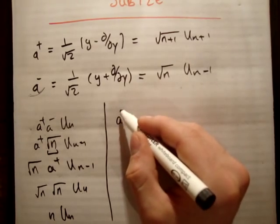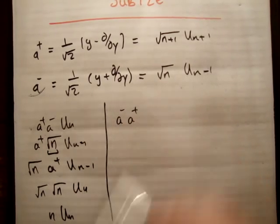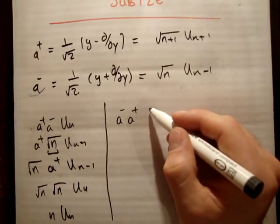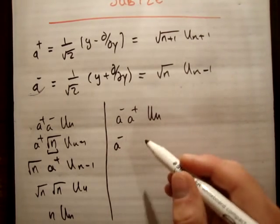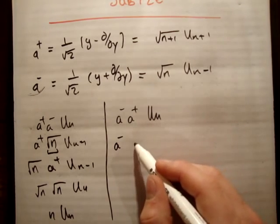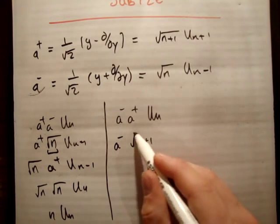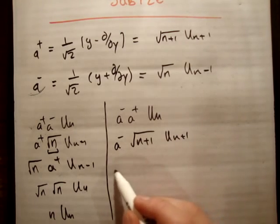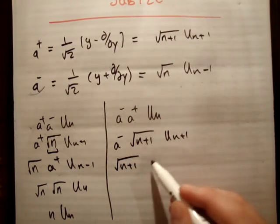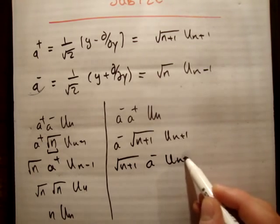And then if we do A- A+, we're going to get un again. Here we have a minus. We need to raise it, then root it, so we get root n plus 1, and we get un plus 1. This is a constant, so pull it out.